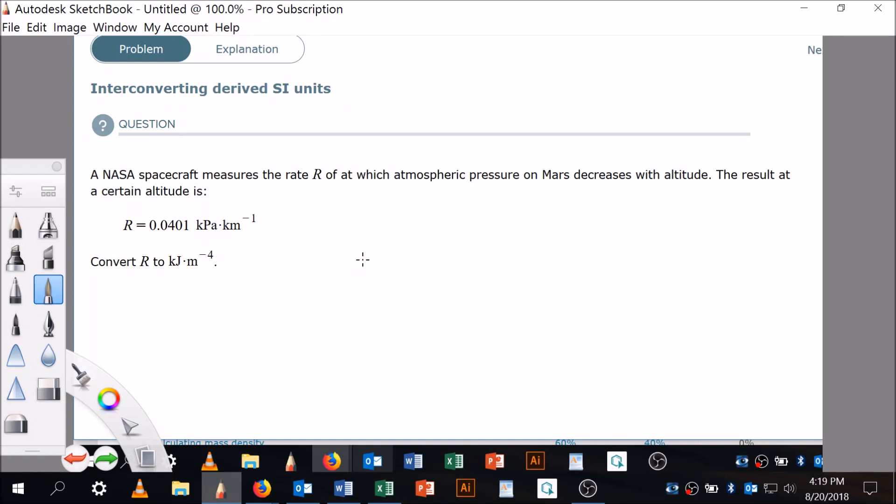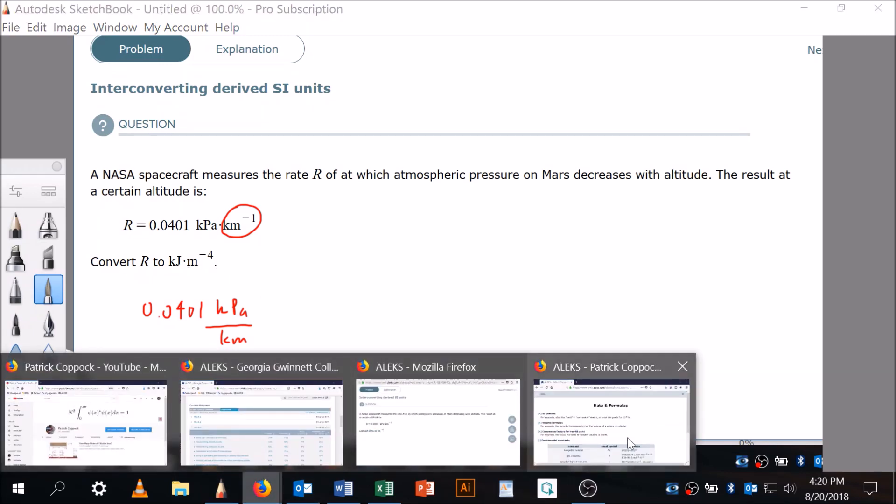So, but let's suppose I clicked on it, and it pulls this up. Okay, this is a beast. It's scary. NASA spacecraft. We're going to do some very simple math to do it, though. So watch out, watch this. A NASA spacecraft measures the rate, R, at which atmospheric pressure decreases with altitude. What does that mean? Kilopascals per kilometer. All right, now, we're supposed to convert this to kilojoules per meters to the fourth. All right, that's not going to be so, well, it's going to be long. Kilopascals per kilometer. You see that's per kilometer right there? See what I did?